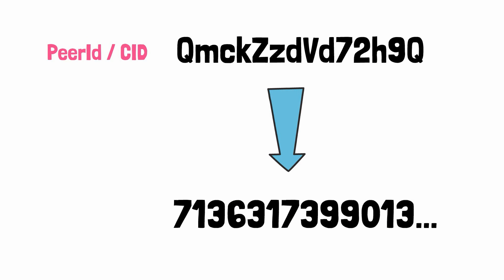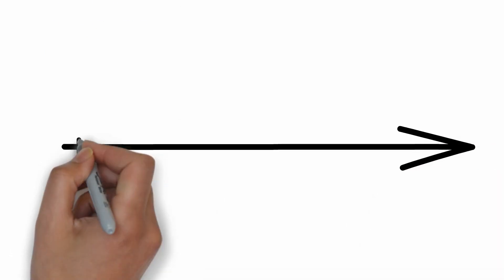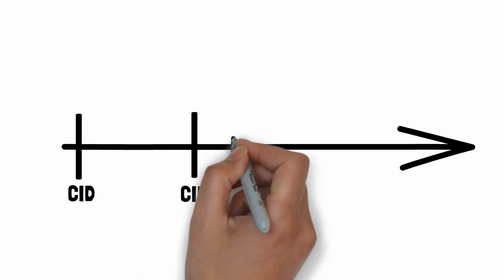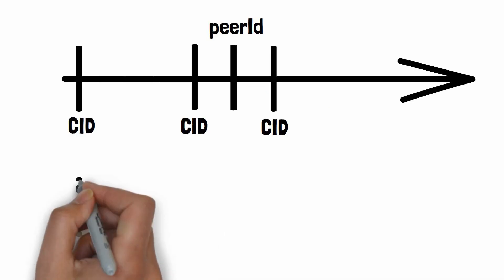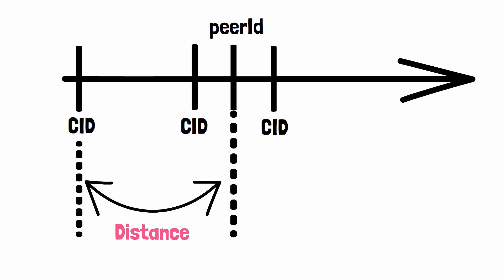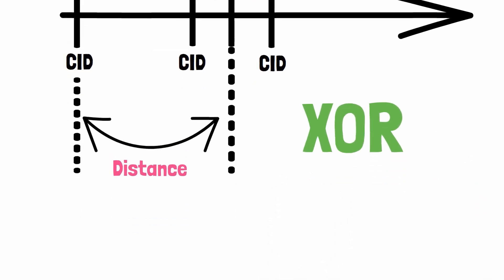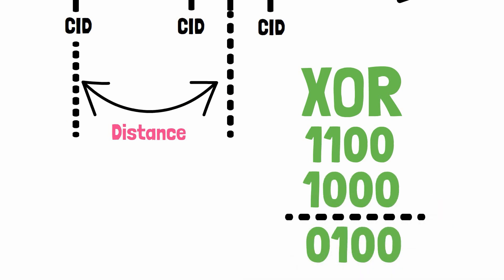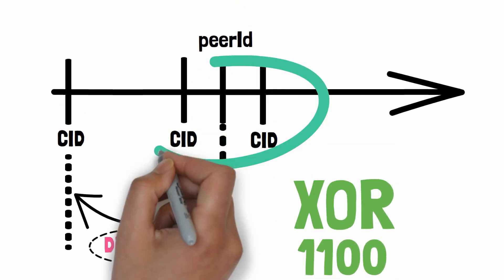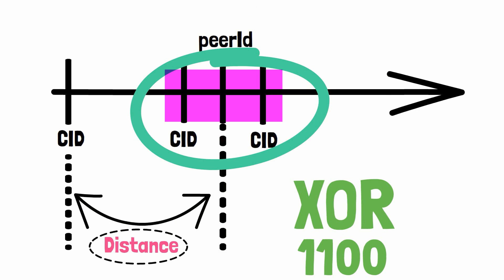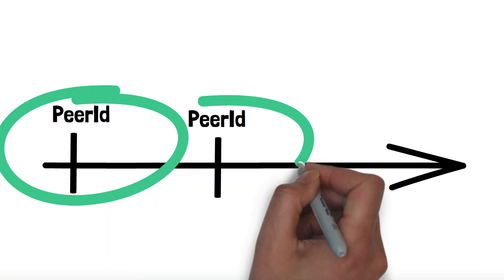Peer IDs can be generated in the same range of numbers as CIDs. Even though peer IDs and CIDs are strings of characters, we can easily map them to numbers. To represent our DHT, you can visualize an axis of numbers representing both the different CIDs and the different peer IDs. Using a special function — the XOR function — we can calculate a distance between two points in the DHT. XOR is a logical operation where output bits are set to 1 if only one of the input bits is set to 1. We use this distance to determine who must know what: every client must store all DHT records below a certain distance threshold.